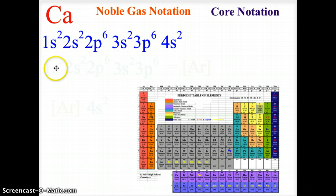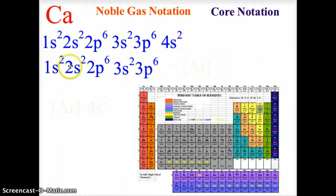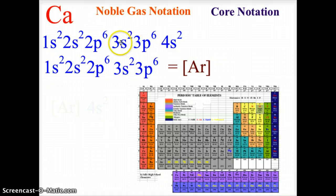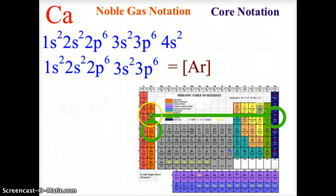Now if we look at 1s2 through 3p6, that is actually the noble gas argon. We know that the noble gas in the row above the element has full electron notations, meaning each orbital is completely full. From calcium we go up one row to the noble gas above it, which is argon, and we replace 1s2 through 3p6 with argon in brackets, then write 4s2.